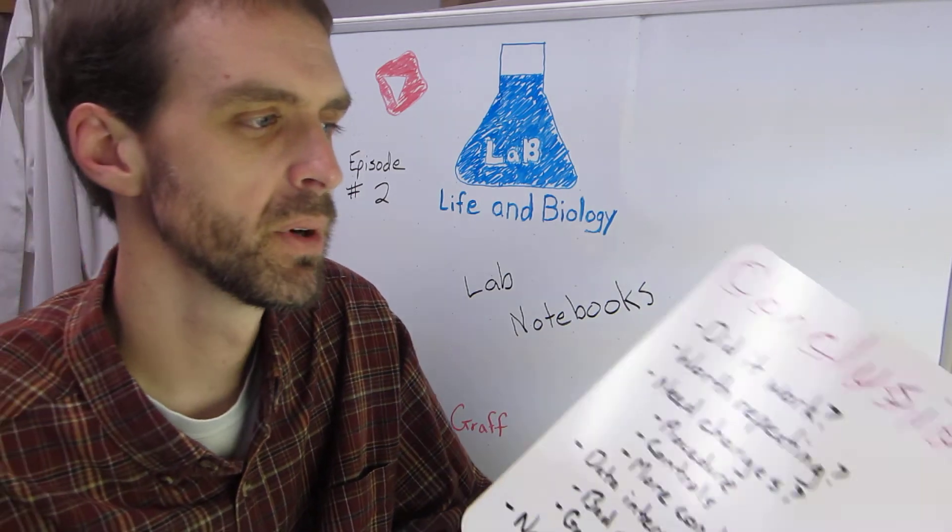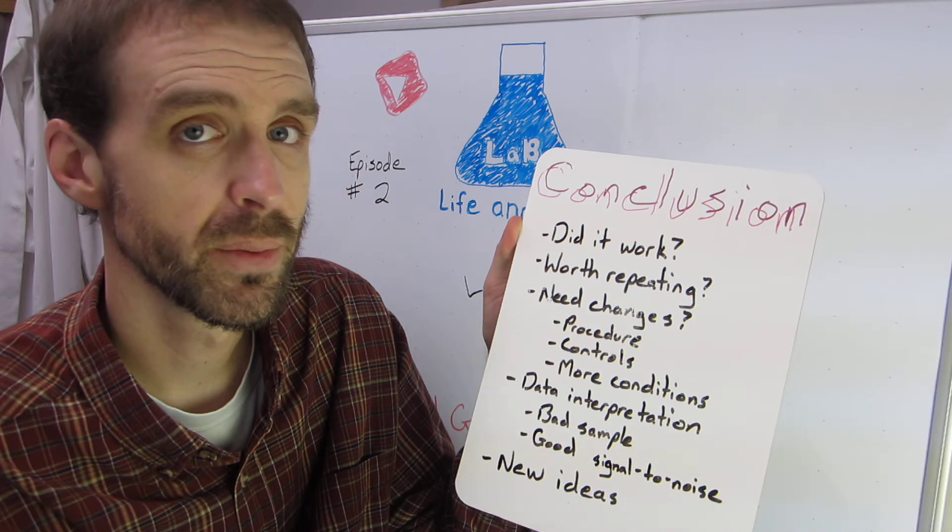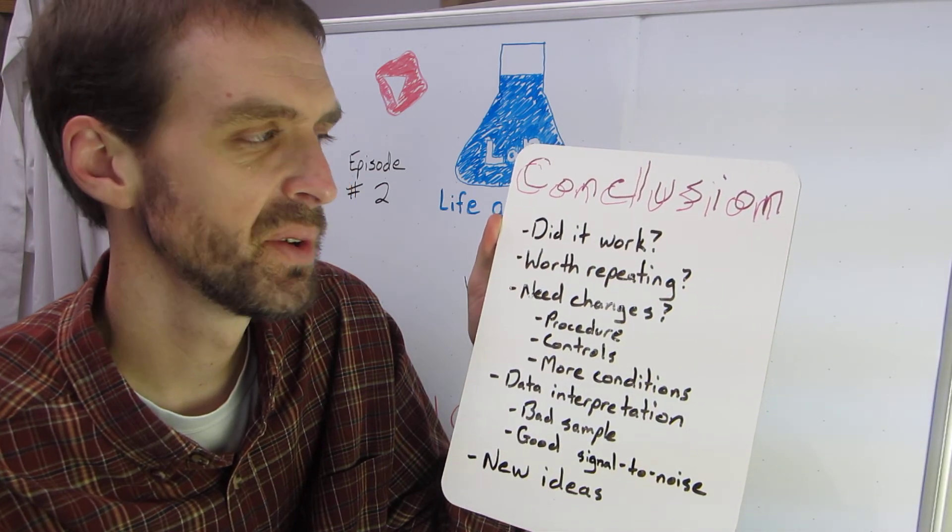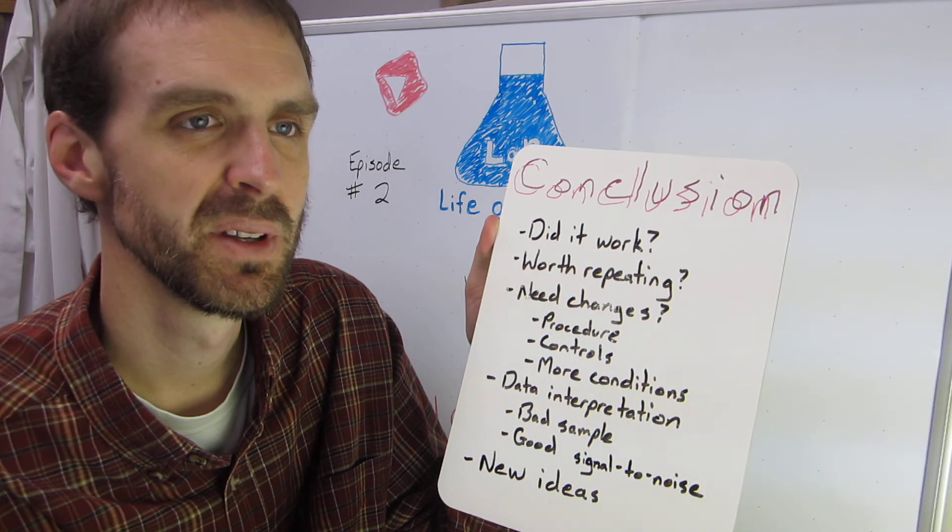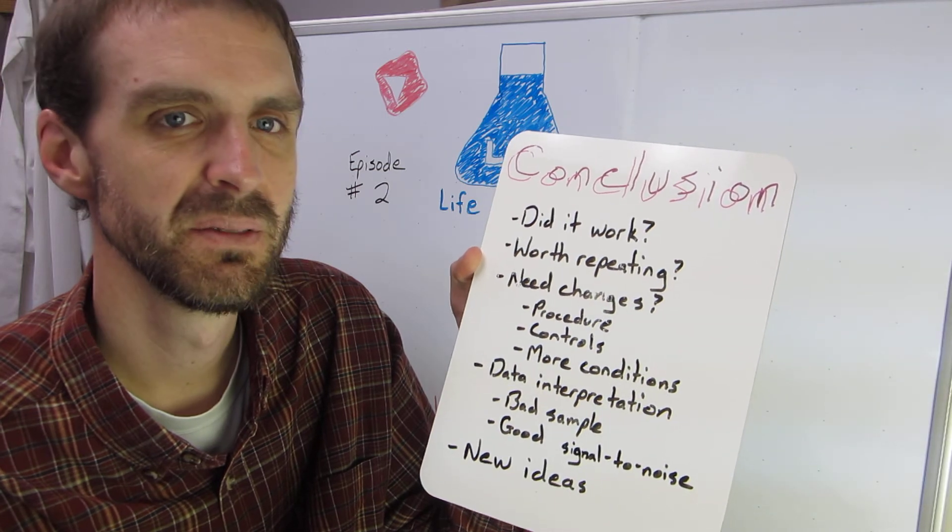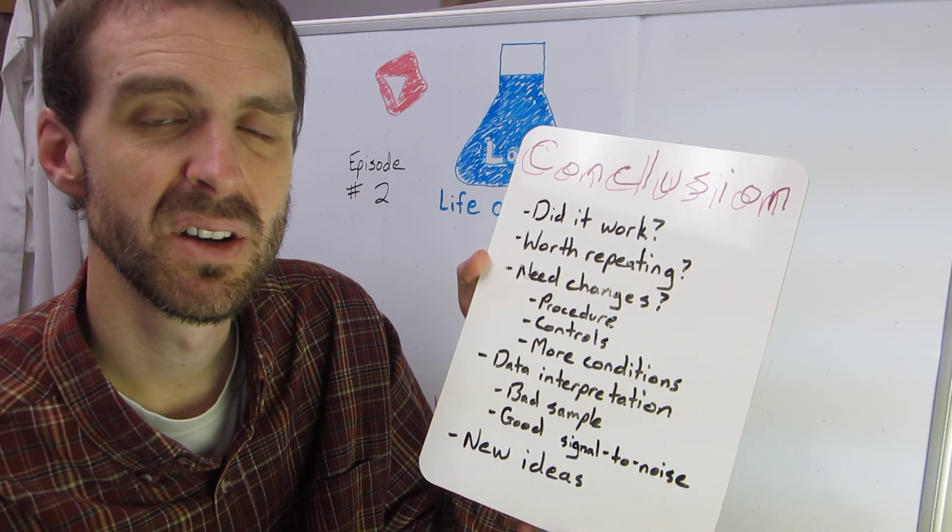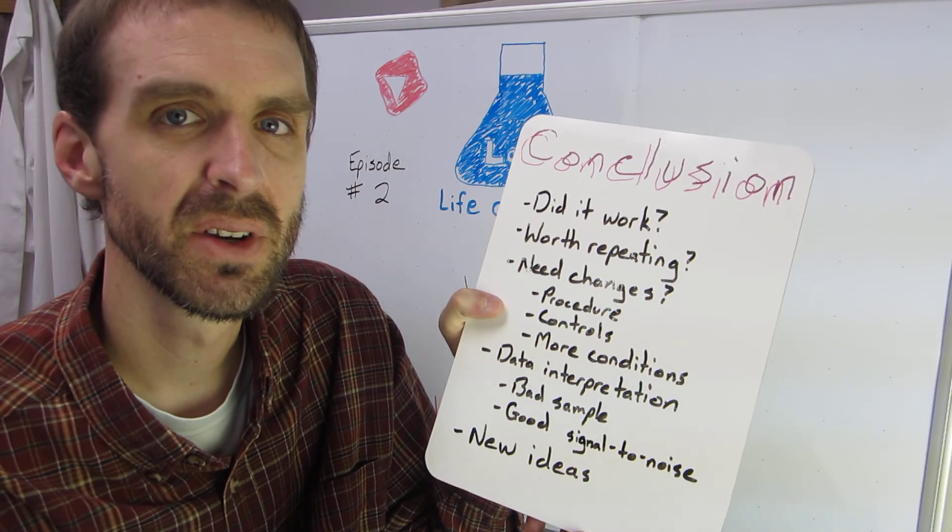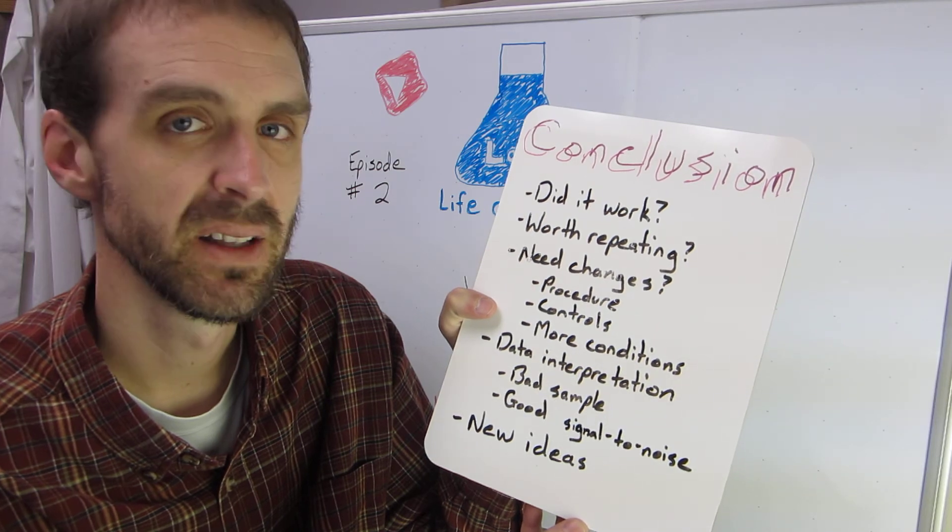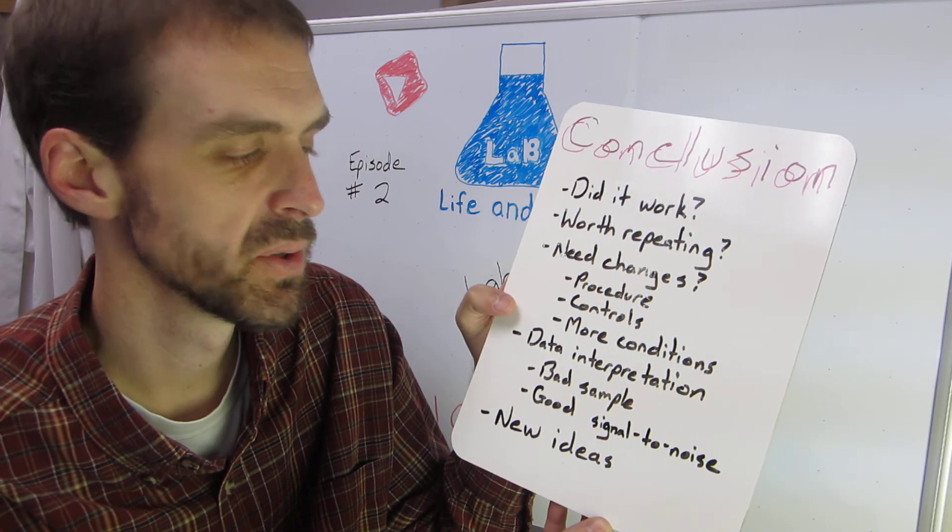And then the final section of your lab notebook is your conclusion. And this should answer all sorts of questions. Did your experiment work? Yes or no? Is it worth repeating? Sometimes you do an experiment and after doing it, you realize, well, that was a silly experiment to do. I shouldn't do that again. I realize now that the experiment setup isn't going to answer what I'm trying to answer. Do you need to make changes to the procedure? Refer back to your procedure where you were making notes on the different steps. Did you have enough controls in your experiment? Can you interpret the data appropriately? Do you need to add more conditions? Maybe you did just a pilot experiment and you want to do, now that you've got all the troubleshooting done, now it's time to do your big experiment. So make notes of these in your conclusions.